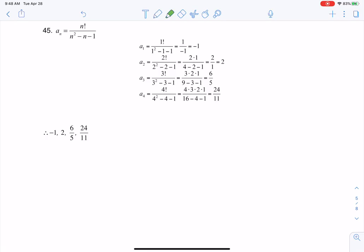So if I want the first four terms, I need to find a sub 1, 2, 3, and 4. So whatever this n value is here, I'm going to plug it in here, here, here, and we're going to see what pops out.